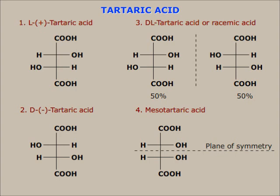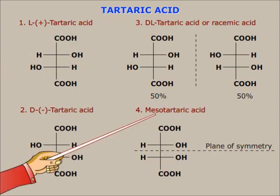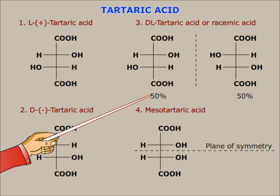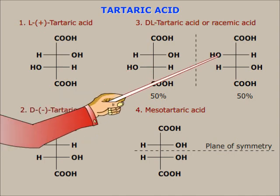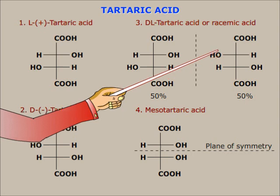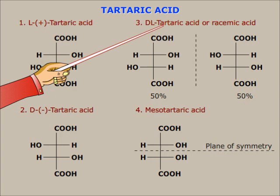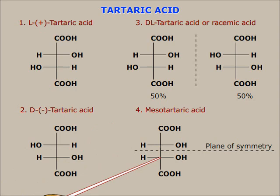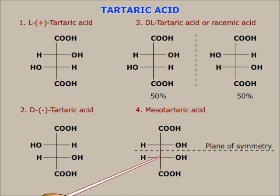Take tartaric acid, which comes in four forms. This is L-plus tartaric acid. This is D-minus tartaric acid. They both are optically active. This form contains 50% D and 50% L-tartaric acid mixed together. This becomes optically inactive because the rotation of the plane of polarized light by one enantiomer is neutralized by the other, such that the total rotation becomes zero. This is called racemic acid or D/L-tartaric acid. This form is called meso-tartaric acid. It has two chiral centers but is still optically inactive because of the presence of a plane of symmetry within the molecule. It may be said that the rotation due to one chiral center is neutralized by the other chiral center within the molecule.